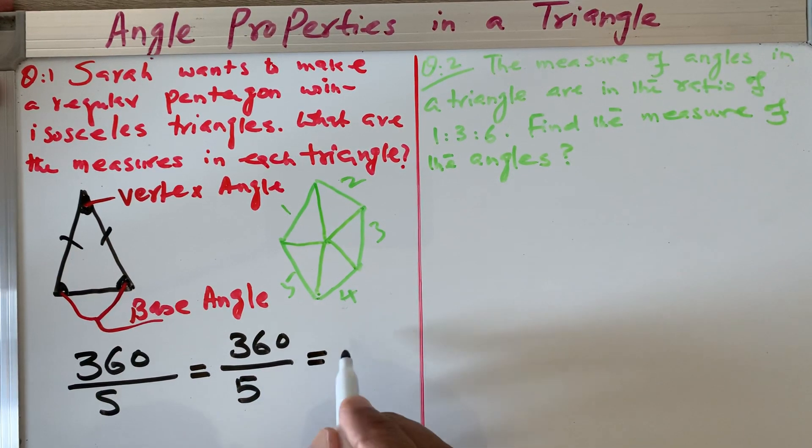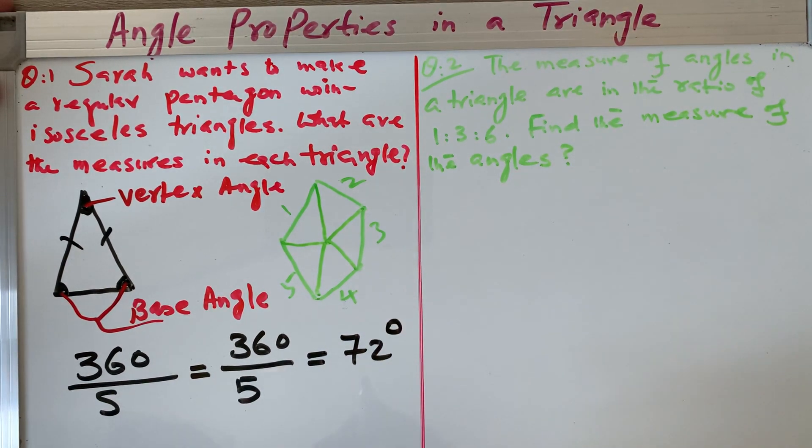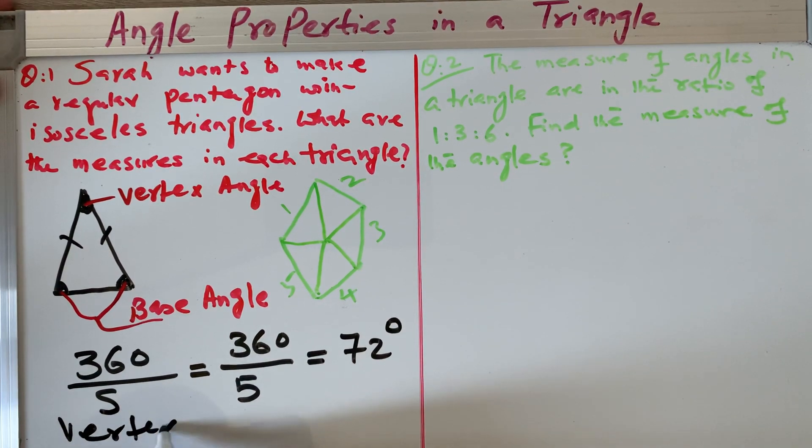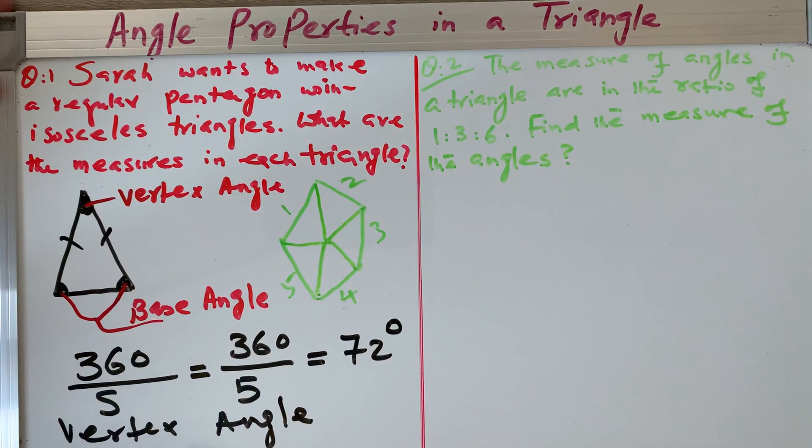So 360 divided by number of sides are five in a pentagon. So you divide and then you have 72 degrees. This 72 degrees is called the vertex angle. So we have the vertex angle of the pentagon.